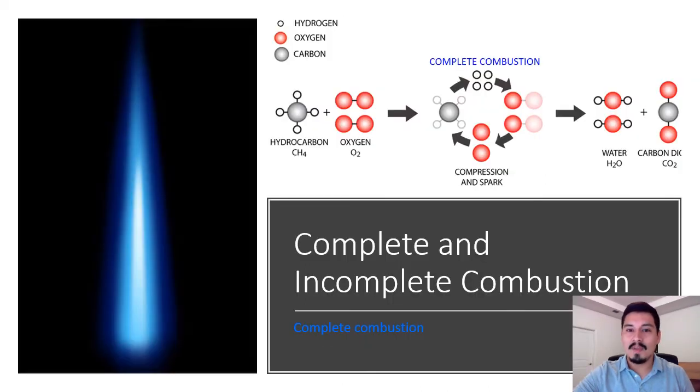If we go deeper into combustion, we find two types: complete and incomplete combustion. Complete combustion happens when all the fuel has been burned. We have a hydrocarbon, which is the fuel mixed with oxygen, then the combustion spark, and we have water and carbon dioxide. The flame in complete combustion will be blue.